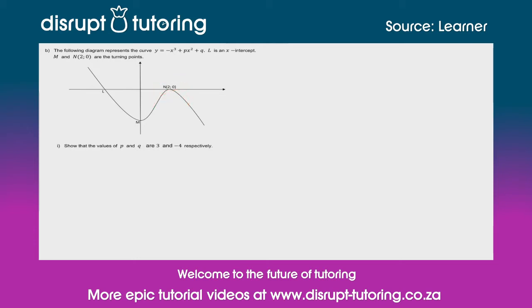So the way I initially approached this question was I said f of x equals a, x minus x1 times x minus x2 times x minus x3. So I did that, and then because I noticed that there was a turning point on the x-axis, I knew that one of these brackets could be squared.